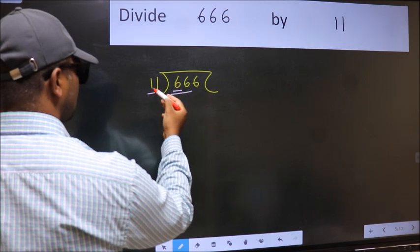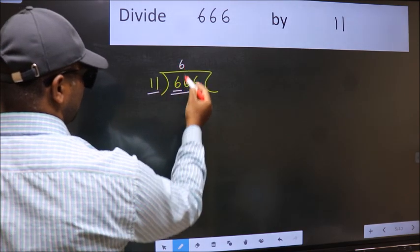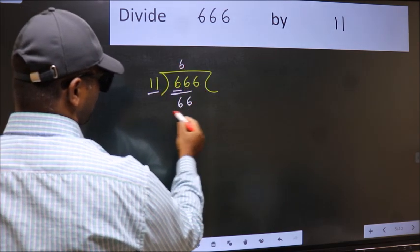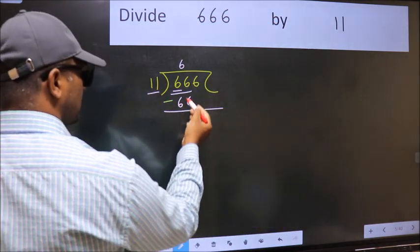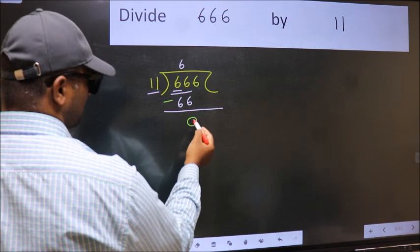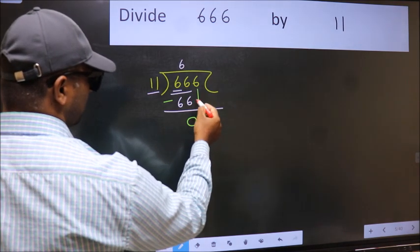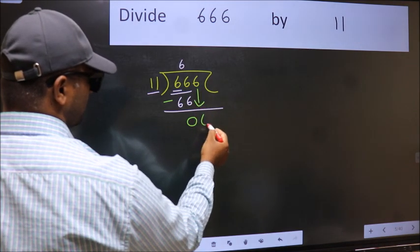When do we get 66 in the 11 table? 11 times 6 is 66. Now you should subtract. 66 minus 66 is 0. After this, bring down the beside number, so 6 down.